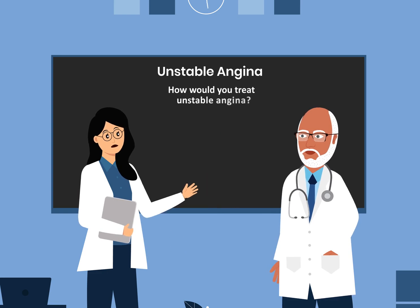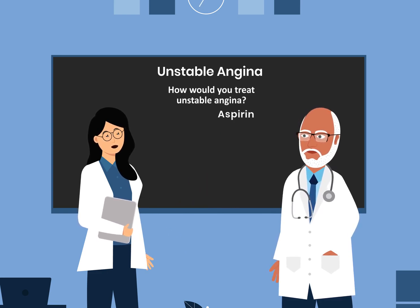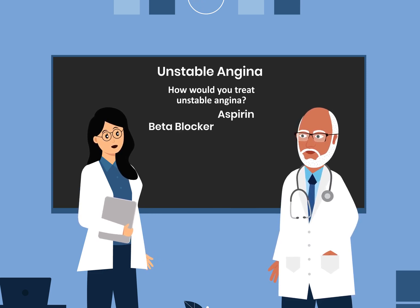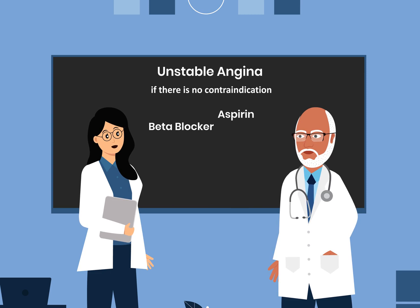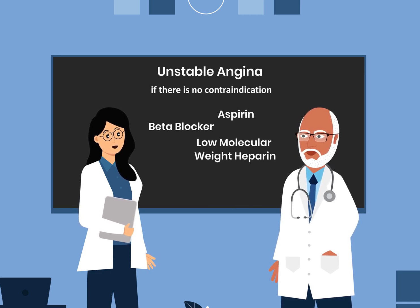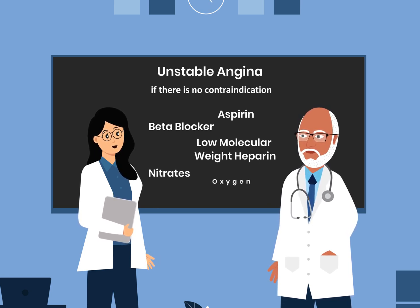How would you treat unstable angina? 1. Aspirin. 2. Beta blocker, if there is no contraindication. 3. Low molecular weight heparin. 4. Nitrates. 5. Oxygen.